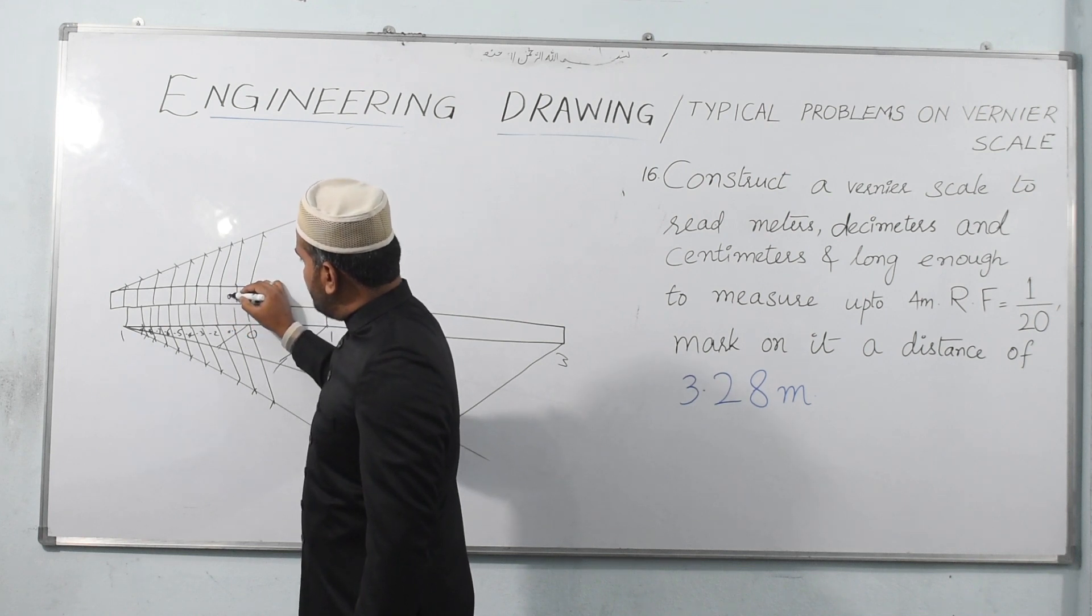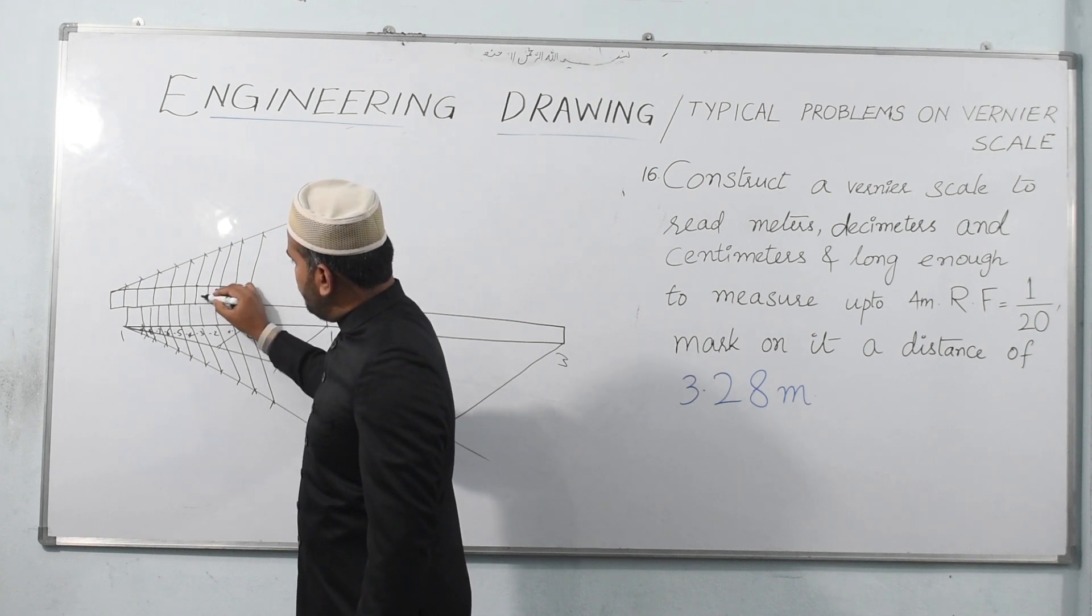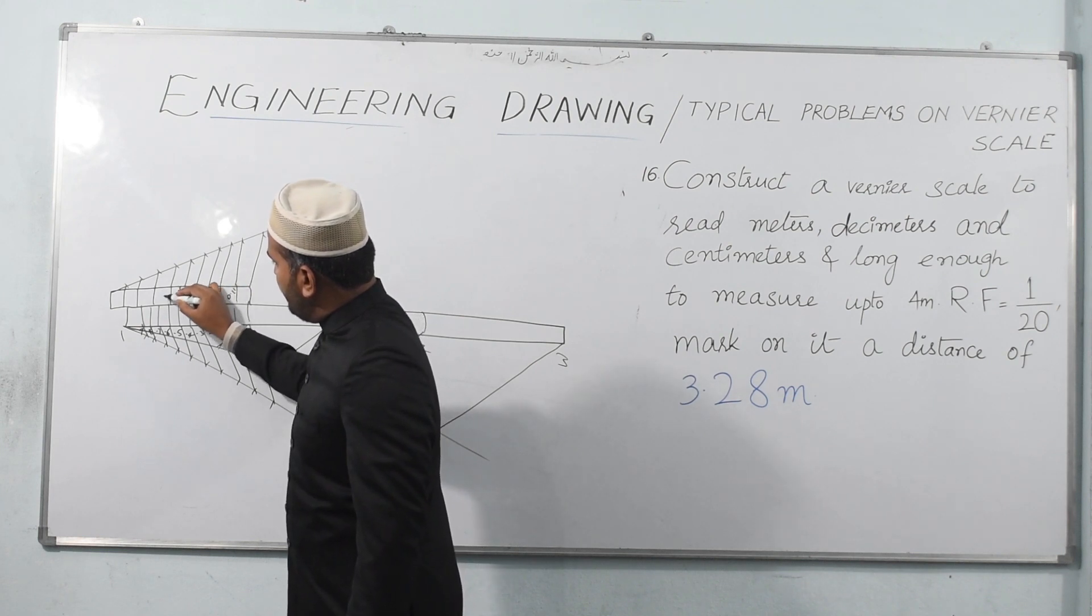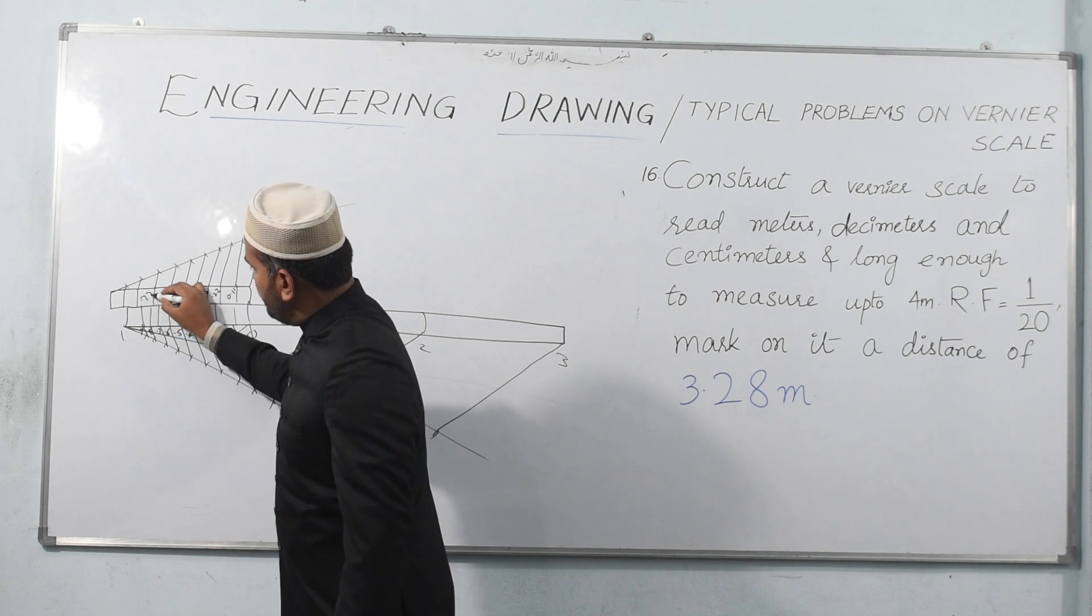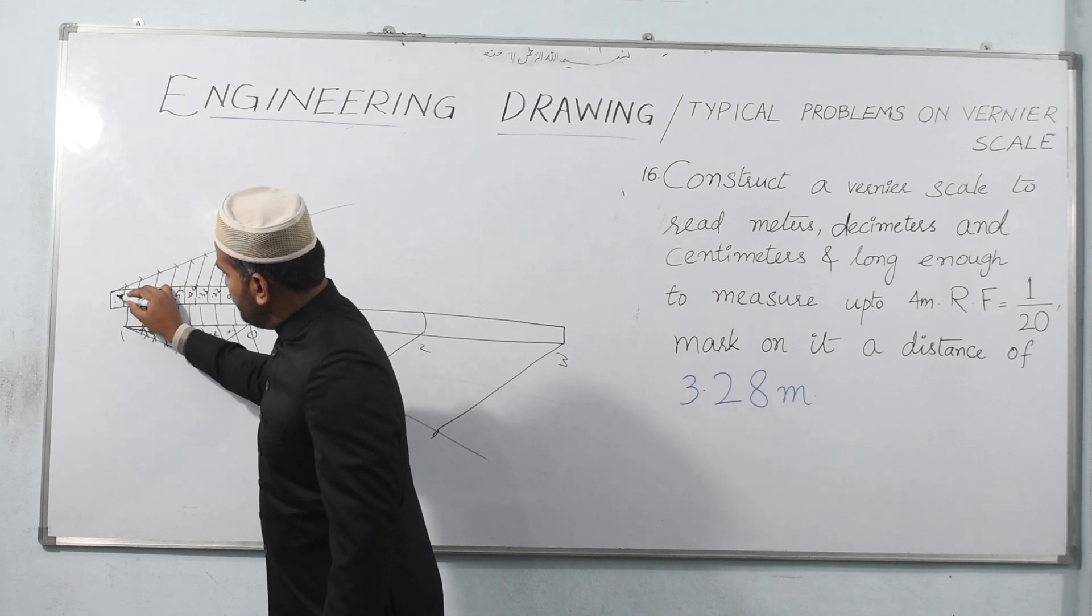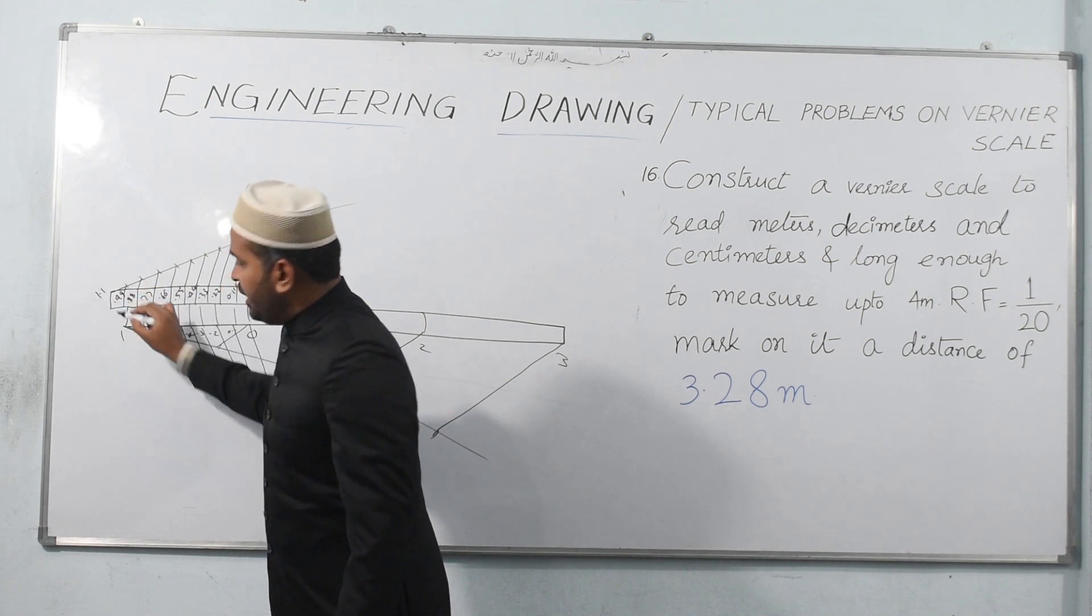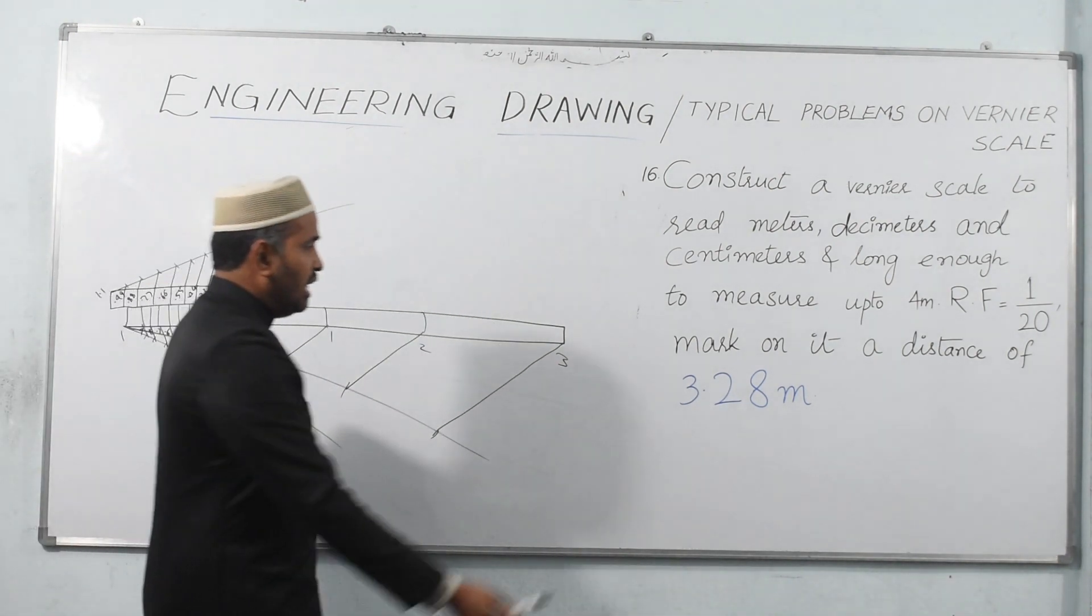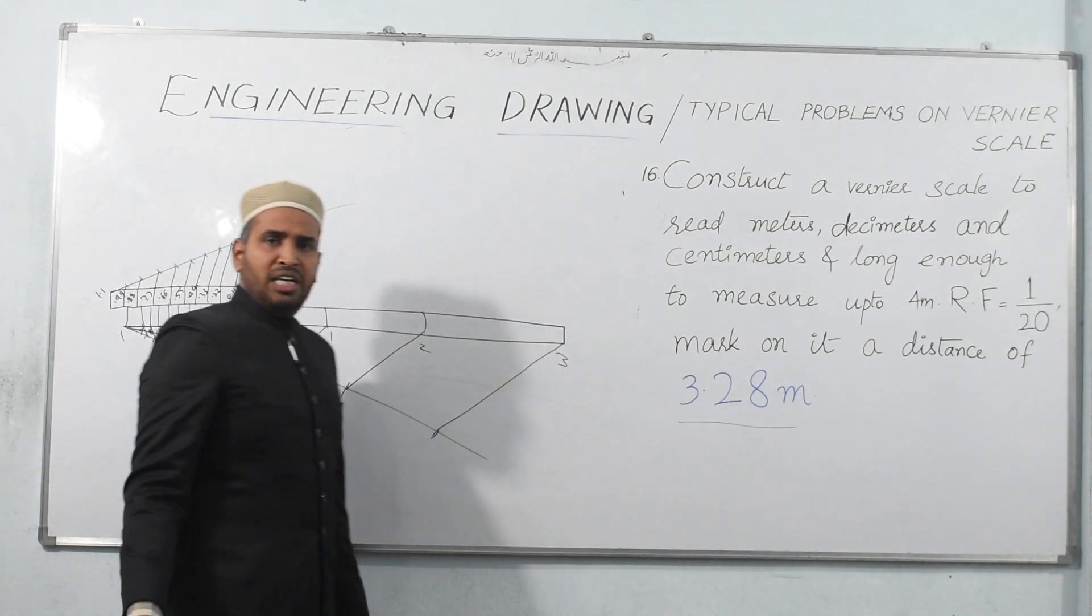This is 0.1, this is 0.11, 0.22, 0.33, 0.44, 0.55, and the last one is 1.1. Now what is that we have to mark? That is 3.28 as mentioned in the question.